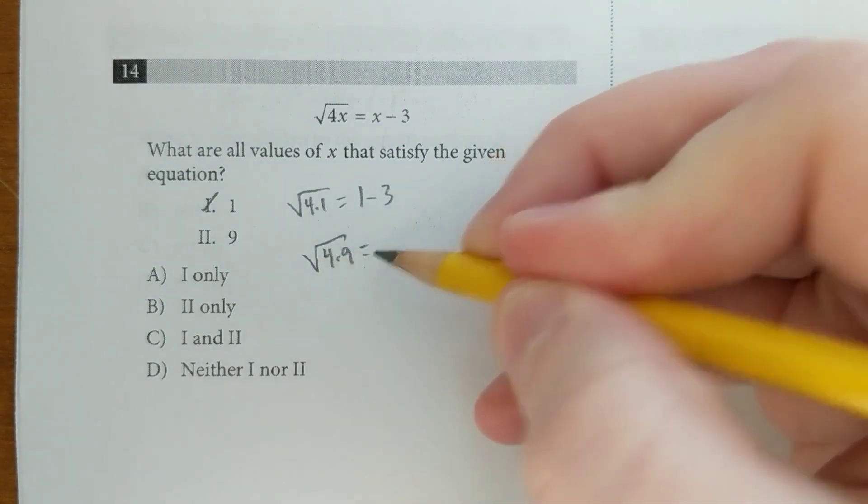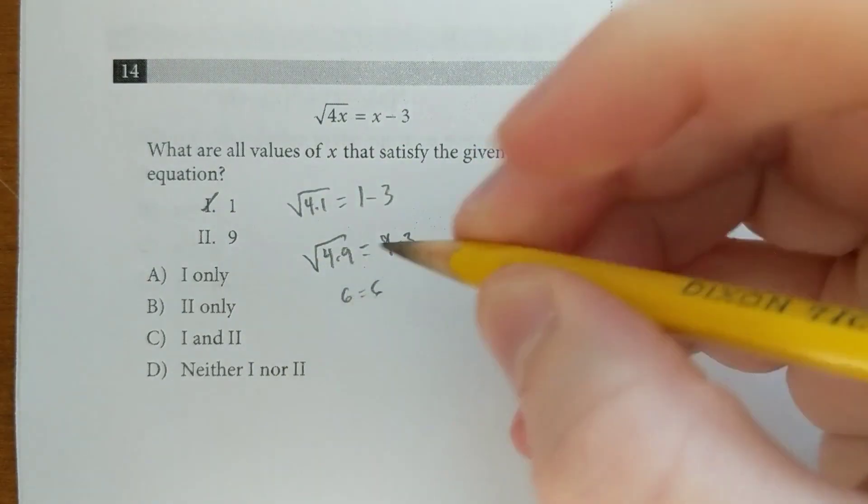Square root of 4 times 9, does that equal 9 minus 3? Yep. So that's B.